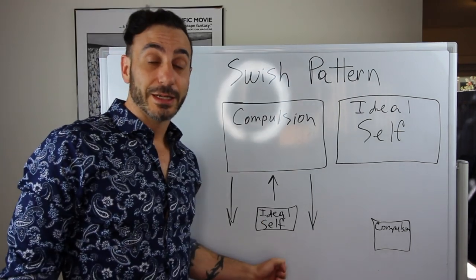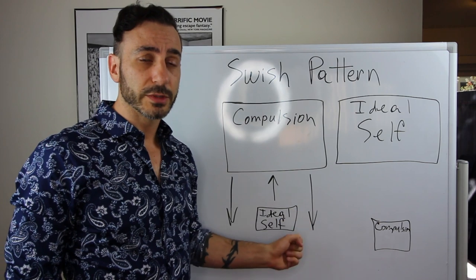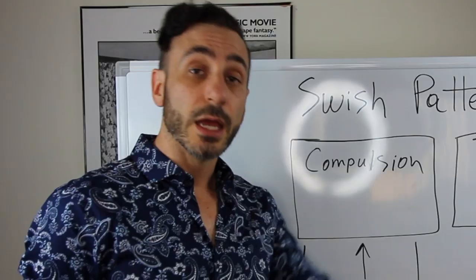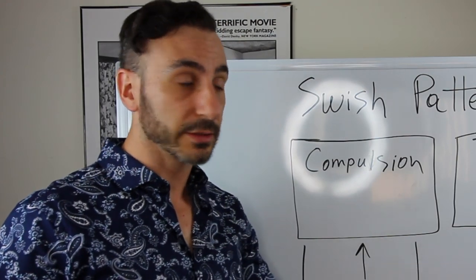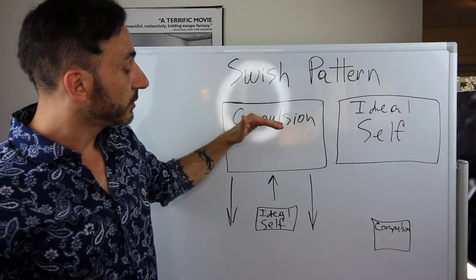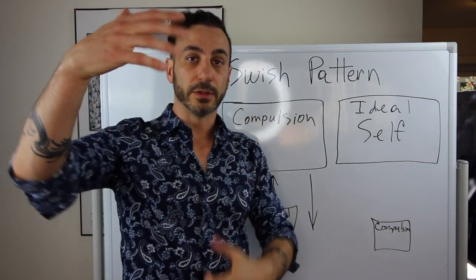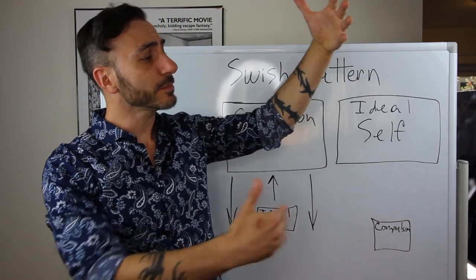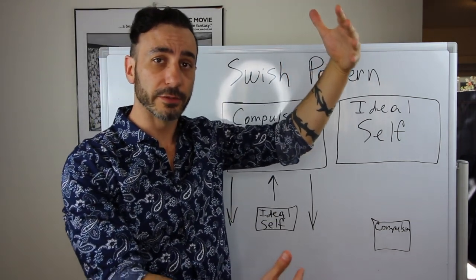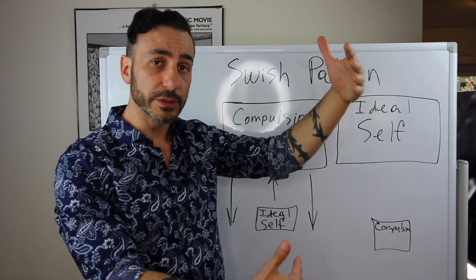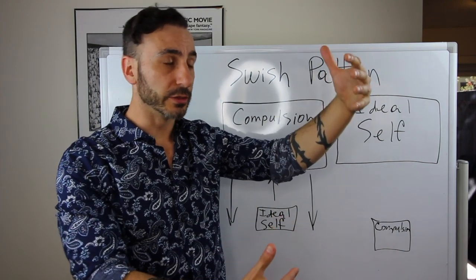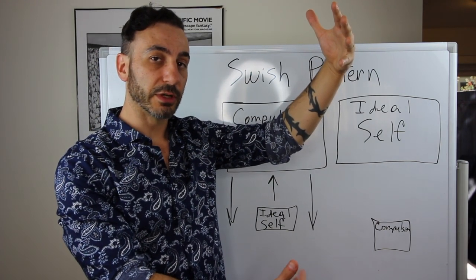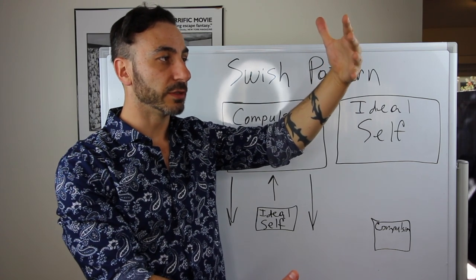I've really drilled down on the ideal self, so hopefully you understand the importance of it, how to optimize it, how to make it compelling, and to leave out the behavior and the context. So you have the compulsion image — up in front of you — and you have the ideal self image down here, small. The compulsion image is big. There are different ways to do this, but the easiest is: compulsion image here big, ideal self image down here small.